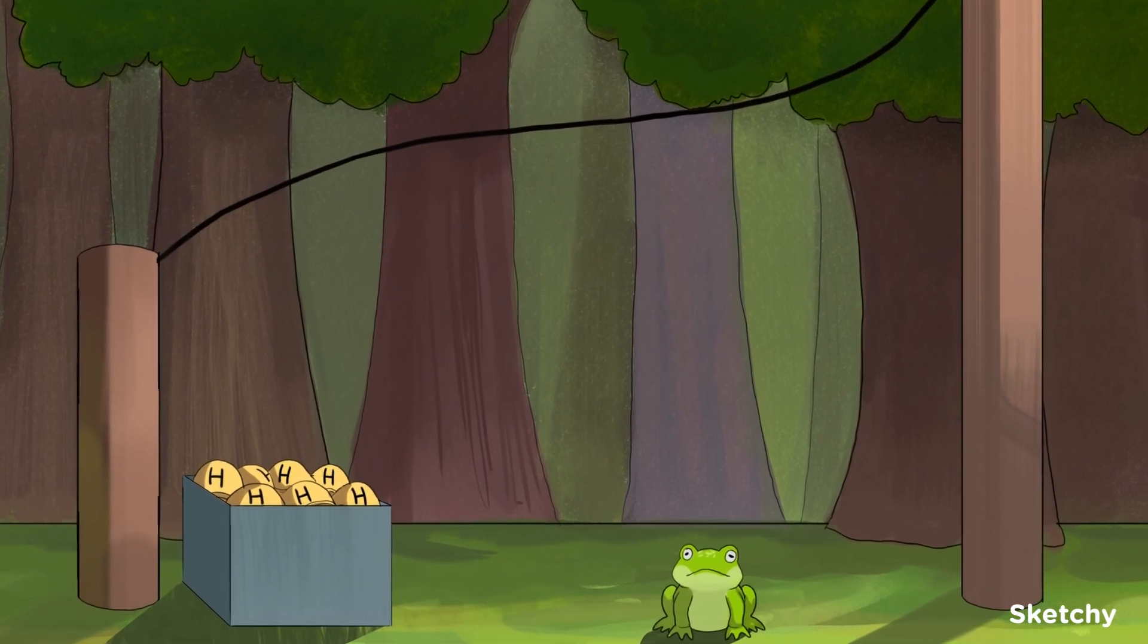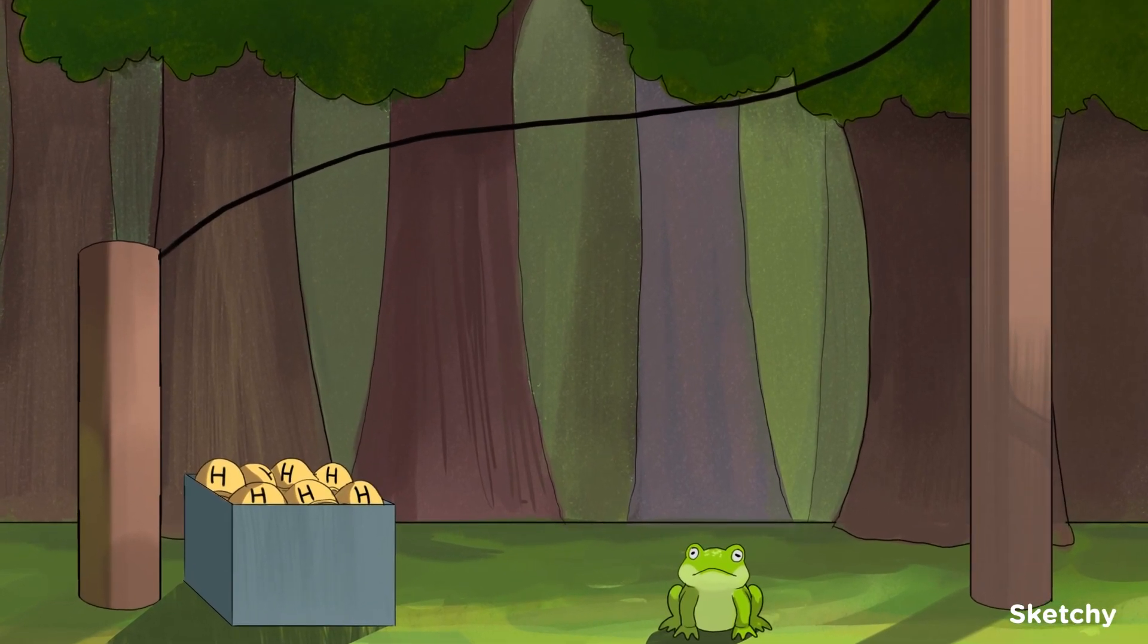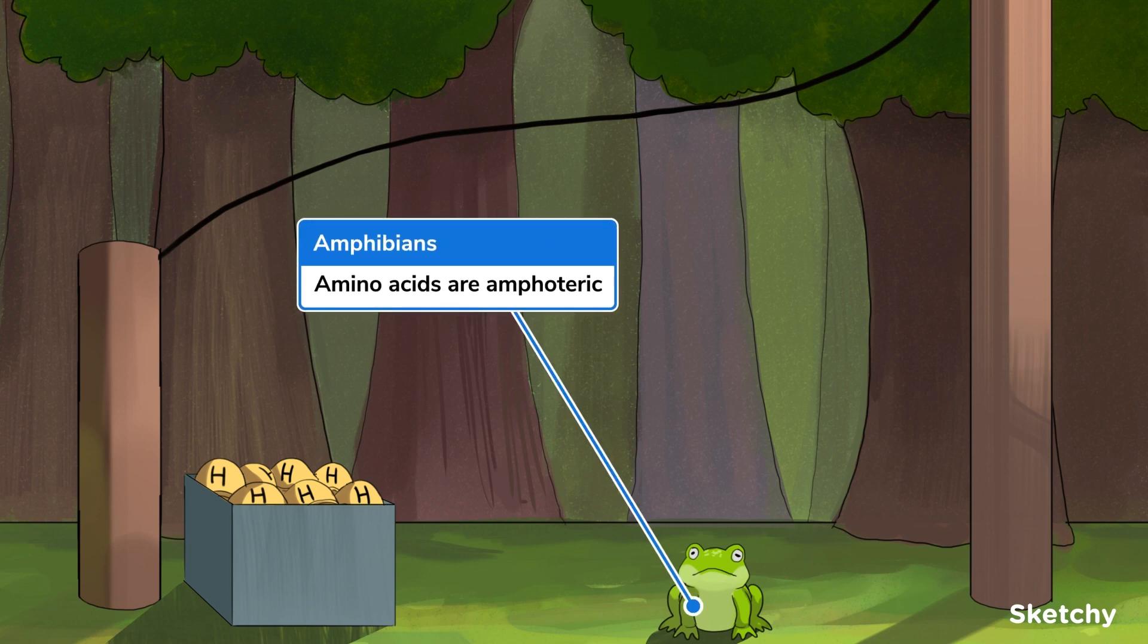Okay, well, I can't handle the suspense, so let's jump right in, like these cute amphibians. These frogs will remind us that amino acids are amphoteric, meaning that depending on the environmental conditions, they will behave as either a Bronsted-Lowry acid or a Bronsted-Lowry base.